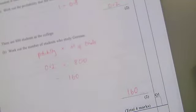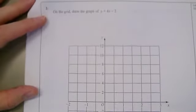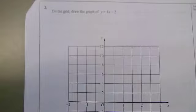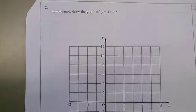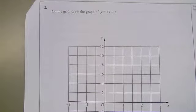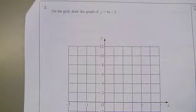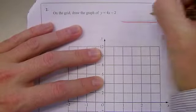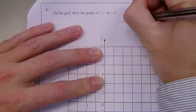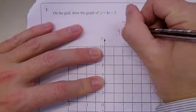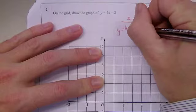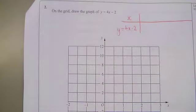Right then, over the page. On the grid, draw the graph of y equals 4x minus 2. So how would we start doing that? Excellent, well done. You start by drawing an xy table. Whenever I do it, I always have certain values I use for x, and then y is equal to whatever x is times by four, and then I subtract two.